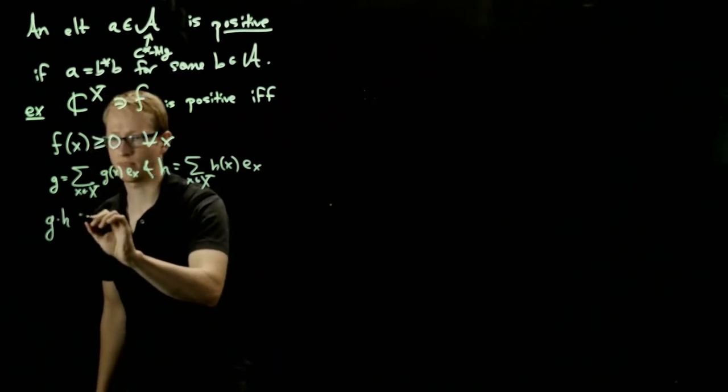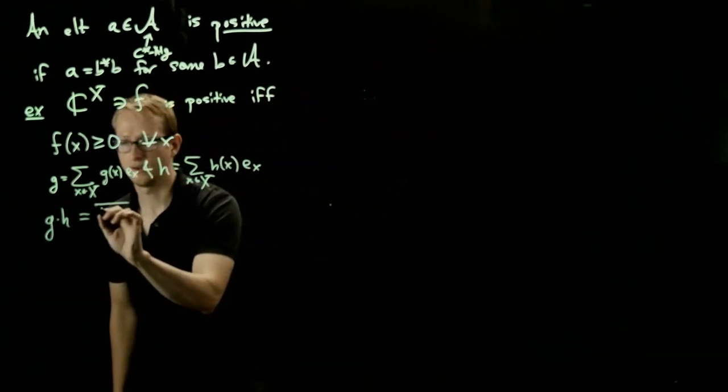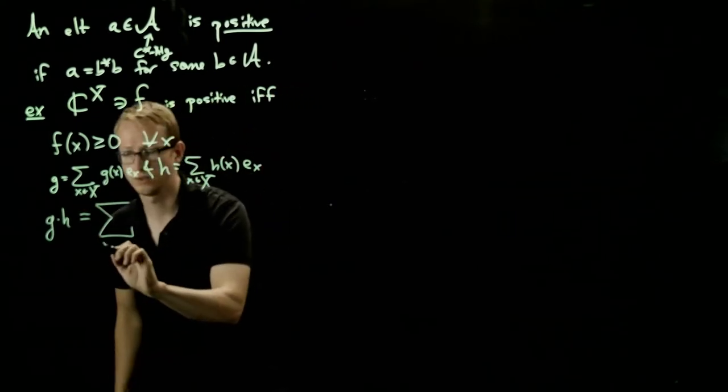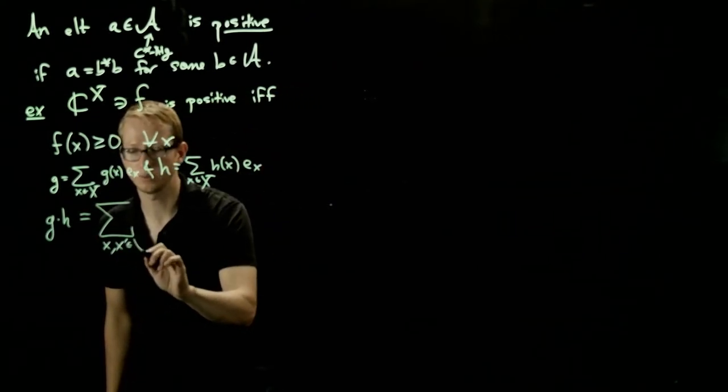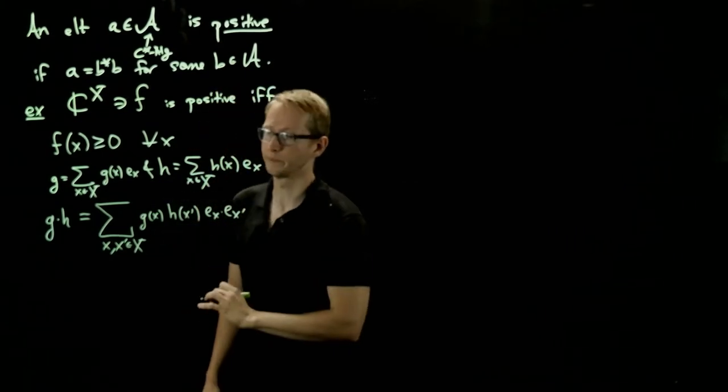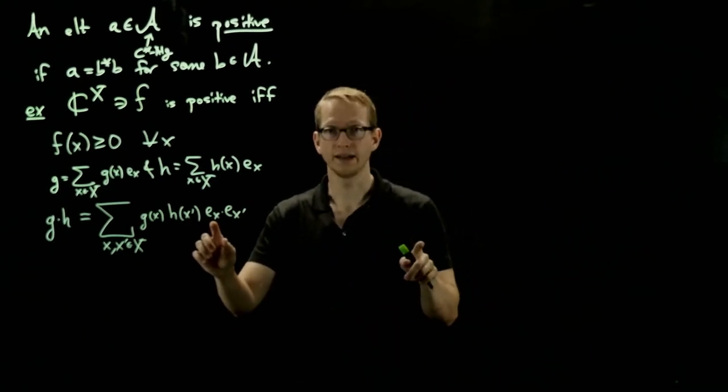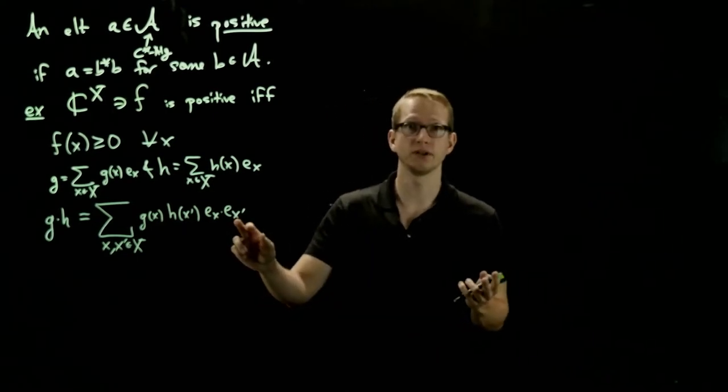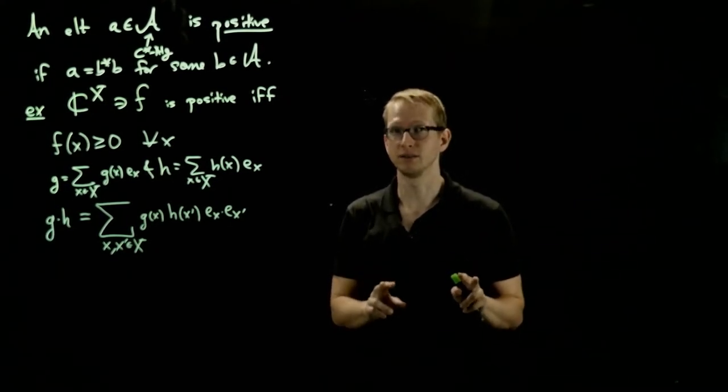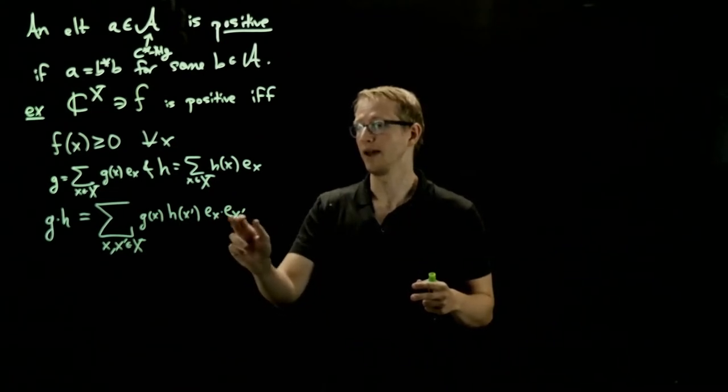G times H is going to be the product of both of these sums. And I'm going to use a different notation for this summation. I'm going to call this X prime so that we don't conflate it with this one. So this is going to be a double sum over X and X prime, both elements in X. G of X times H of X prime, E_X times E_X prime. Now what is the product of these two functions? E_X is the function that gives us one at X and zero everywhere else, while E_X prime is the function that gives us one at X prime and zero everywhere else. Now when we multiply those two functions, the only time that it's ever non-zero is if X and X prime are both equal to each other, and the input is exactly that element X.